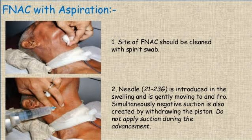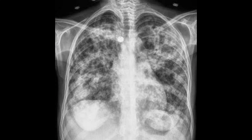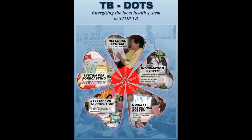FNAC, or fine needle aspiration cytology, is done for certain cases. Usually the cause of death in pulmonary tuberculosis is pulmonary insufficiency, pulmonary hemorrhage, or sepsis due to disseminated miliary tuberculosis. Tuberculosis is treated by DOTS therapy — directly observed treatment short course — which consists of 4 to 5 combinations of antibiotics.